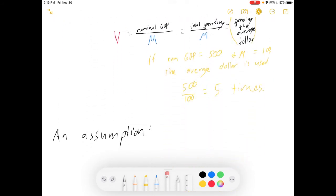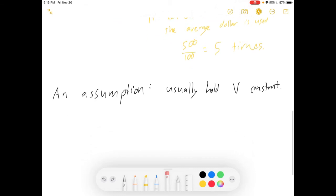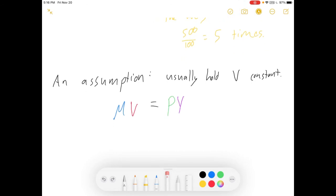So hopefully those anecdotes help you to make sense of what those pieces are in the equation. Now, I need to point out one important assumption we make. We usually assume that V is constant, that this velocity variable doesn't change. Now, I realize that in real life it can. People can change their behavior. But for the sake of this model, we assume that it's constant.